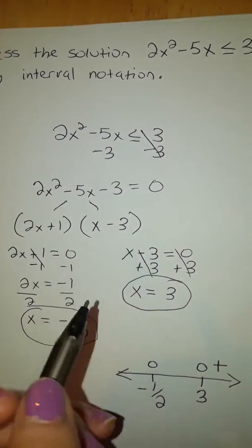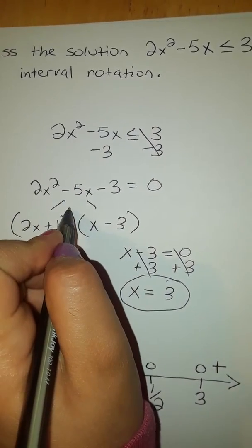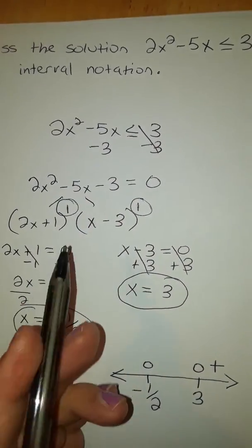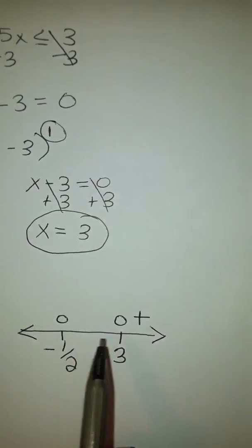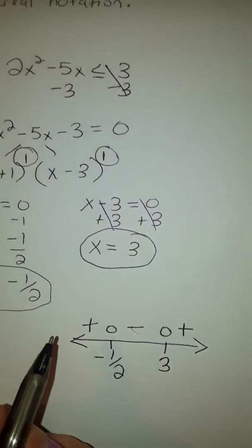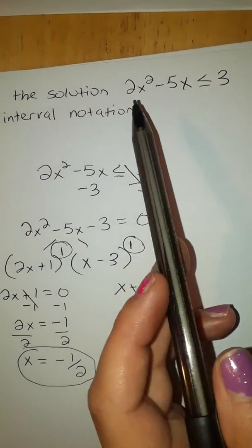Now since when we factor it, we notice that the exponents here, there's an invisible one here, is an odd exponent, we know that the signs are going to be alternating. So we're going to do plus, minus, plus.